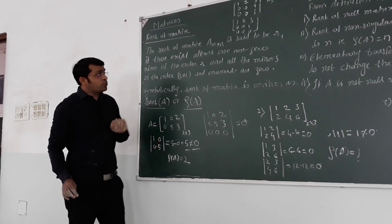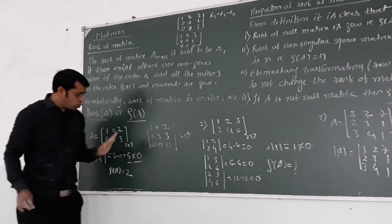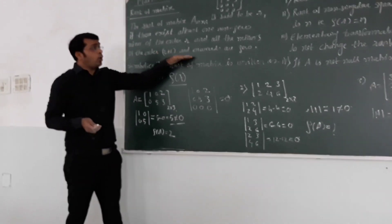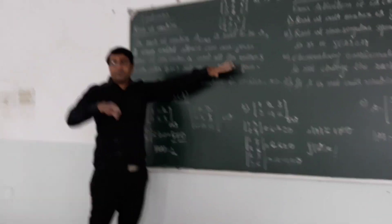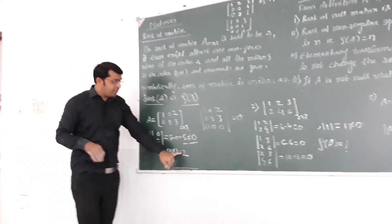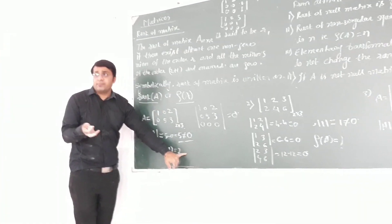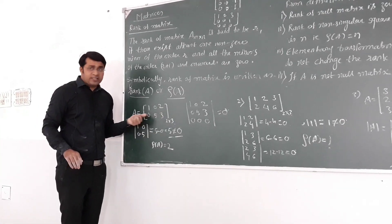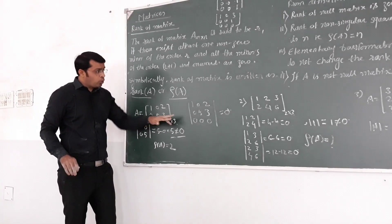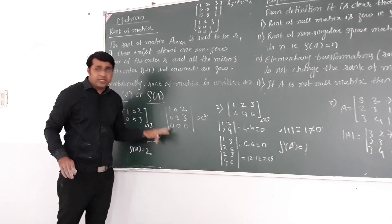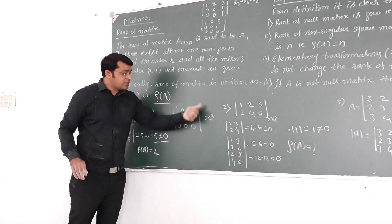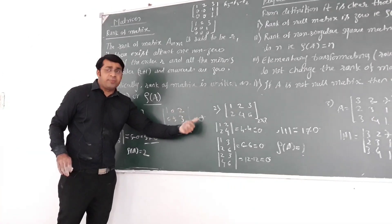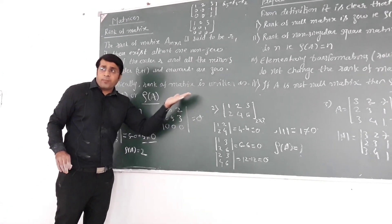So the value of r, which is rank, is 2 here. Now all the minors of order r plus 1 and onwards should be 0. We check that: r plus 1 means 2 plus 1, that will be 3. So we look at the minor of order 3. We are having the matrix 2 by 3, so if I add a row of zeros, I get a minor of order 3. If you calculate this determinant where one row is 0, the value of the determinant will be 0.